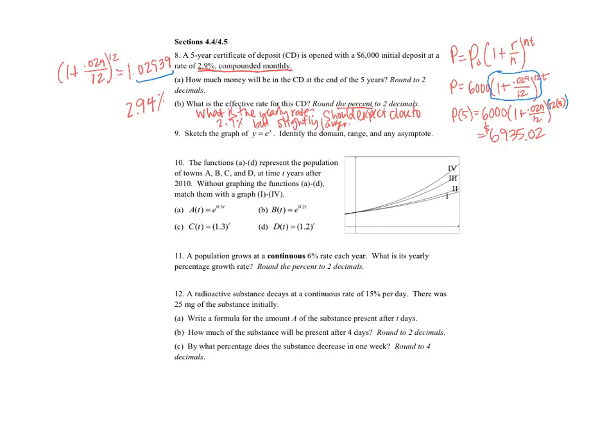And number nine, it says sketch a graph of e to the x, identify domain, range, and the asymptote. So if I graph e to the x, I know that e to the zero is 1, so that point is when it goes through. I know that e to the first is e, and e is about 2, more than a half.